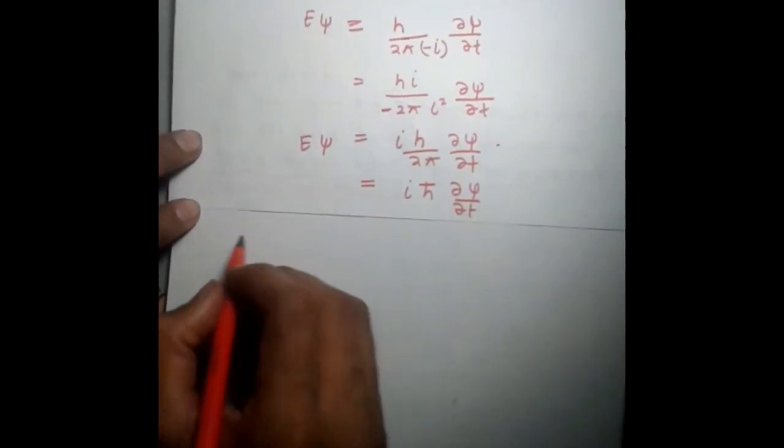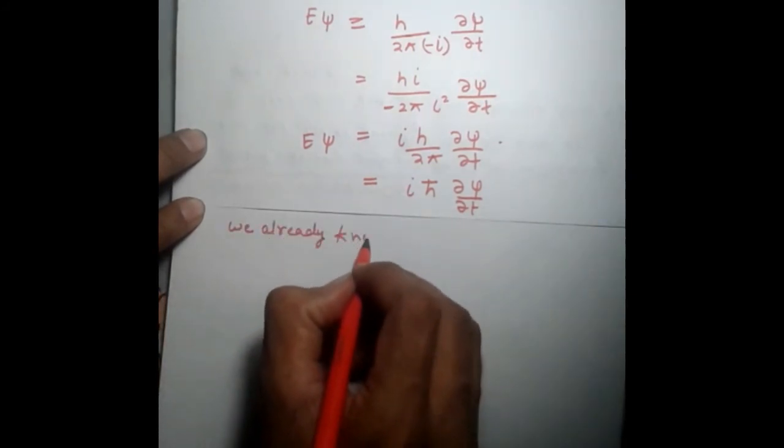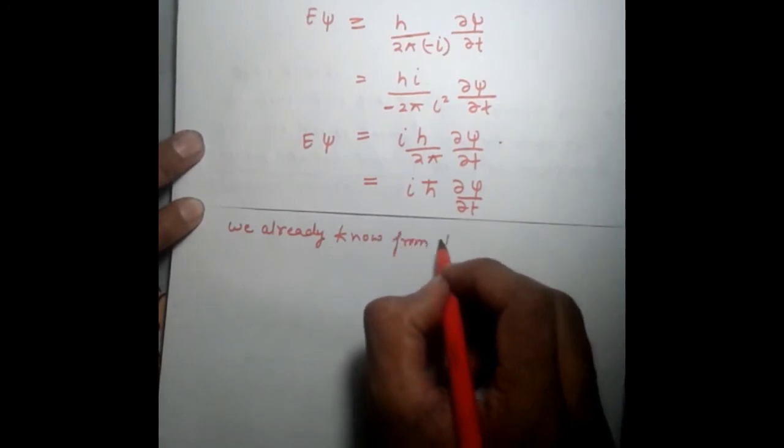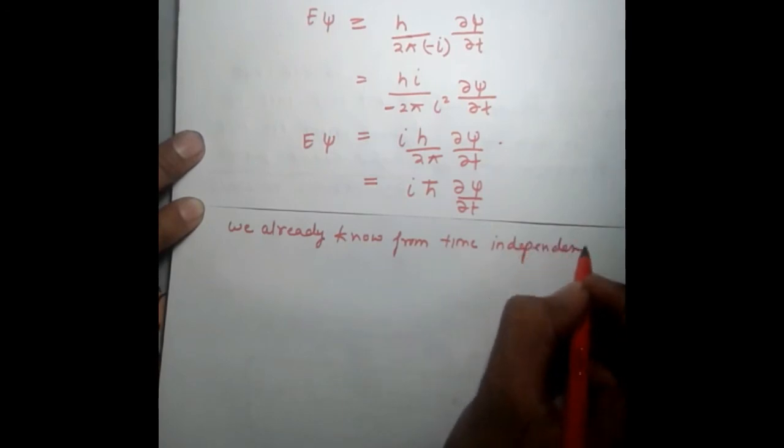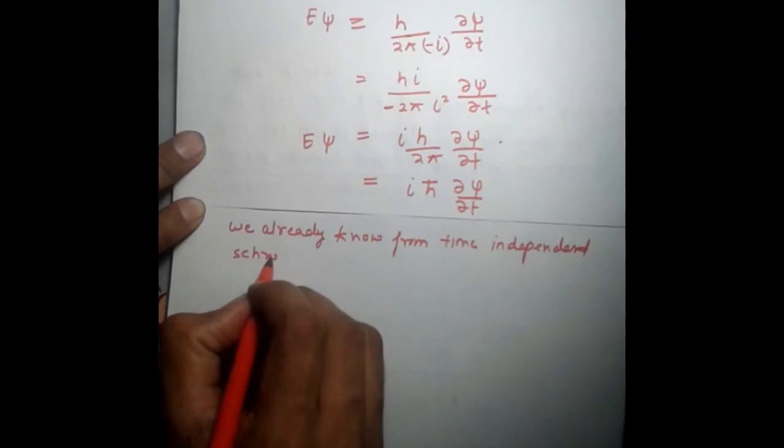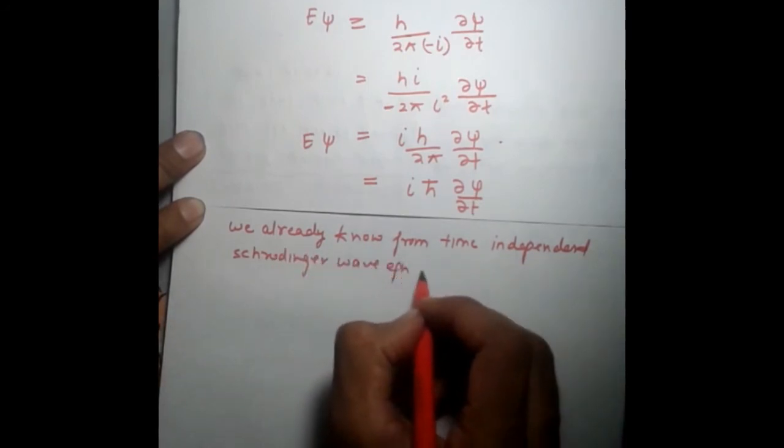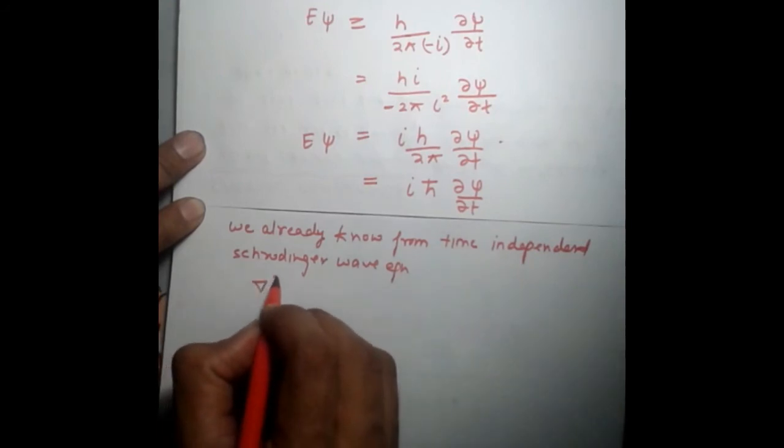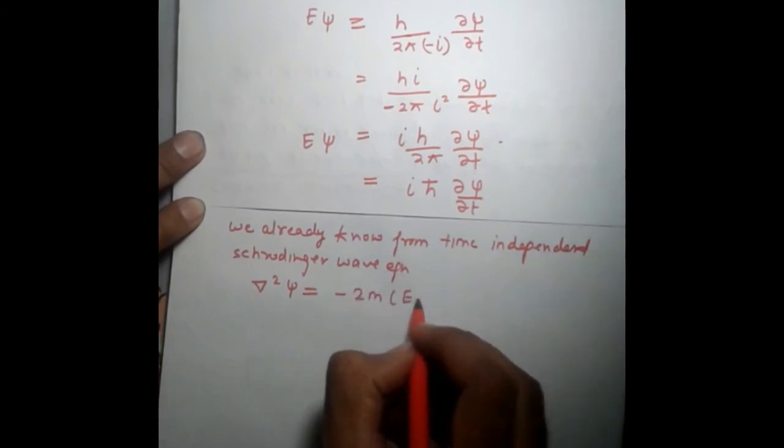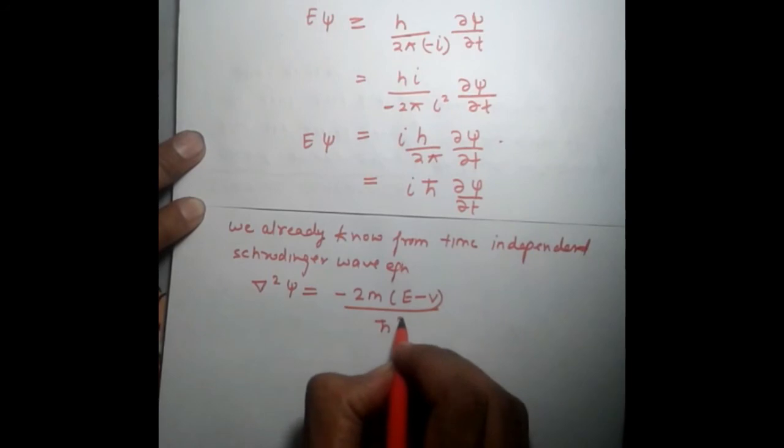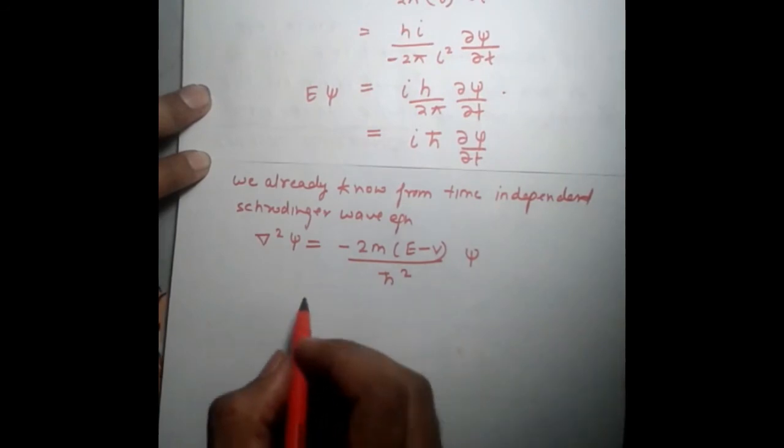Since we already know from time independent Schrödinger wave equation, ∇²ψ = -2m(E-V)/ℏ² ψ. This is Schrödinger time independent wave equation.